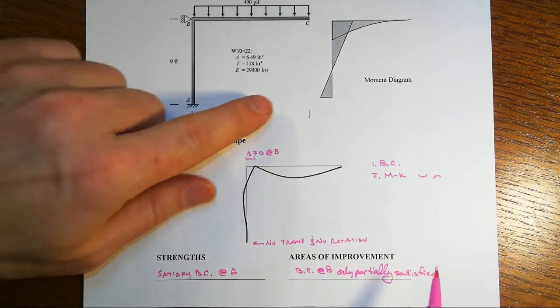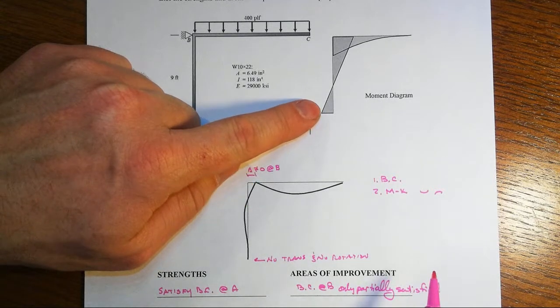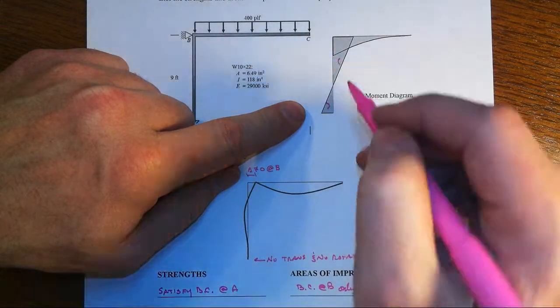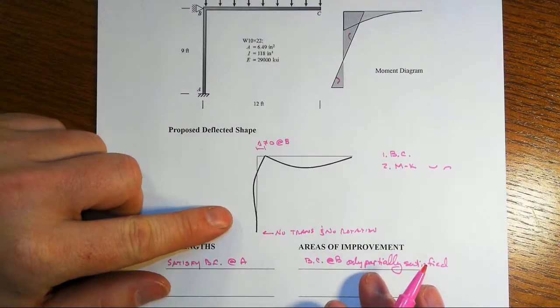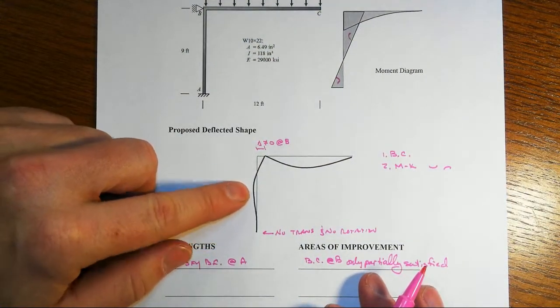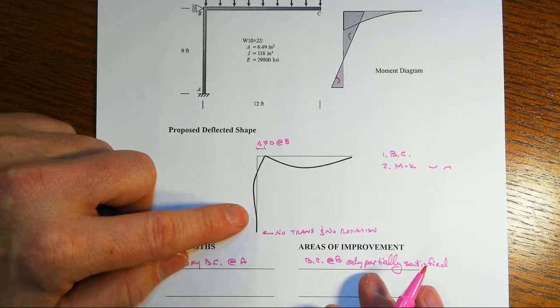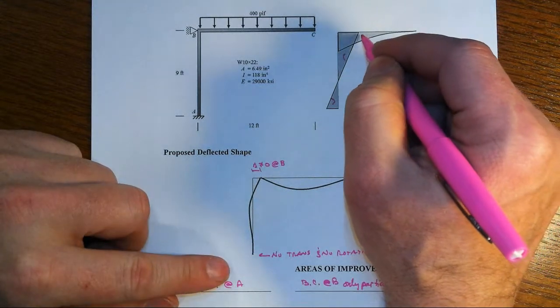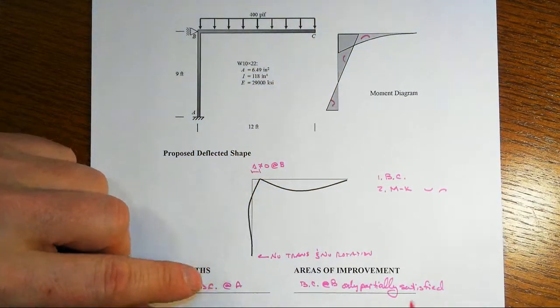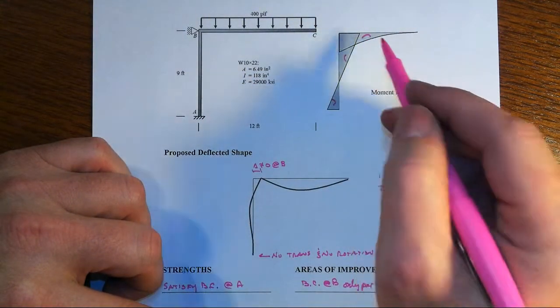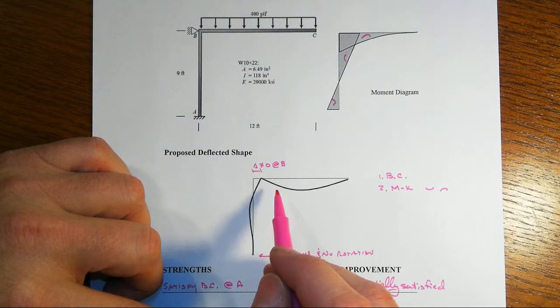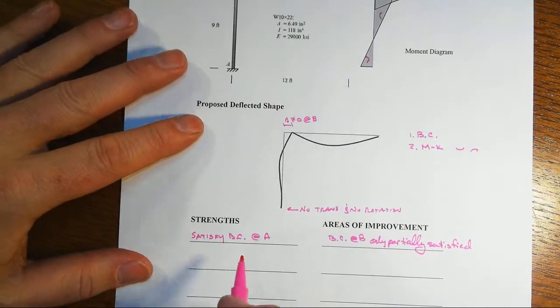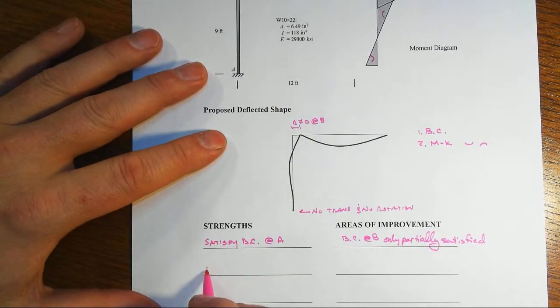At the base of the column we have curvature that should be like so, reverse curvature, and we have that in the column and it's in the correct direction that matches the moment diagram - so that's good. For the cantilever beam segment we have curvature that should be going down, this is a negative moment that's indicated there, and that's not what we've got. So we got a problem here. We have a strength in that we do have reverse curvature.